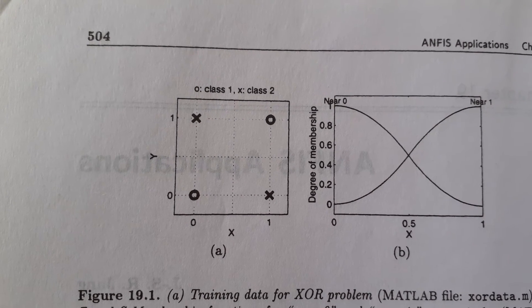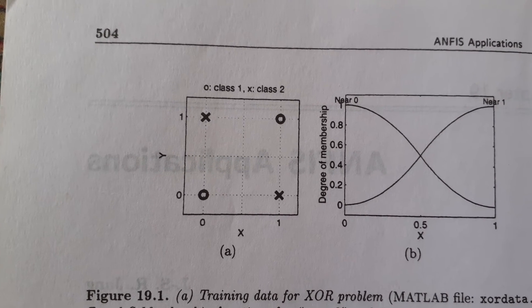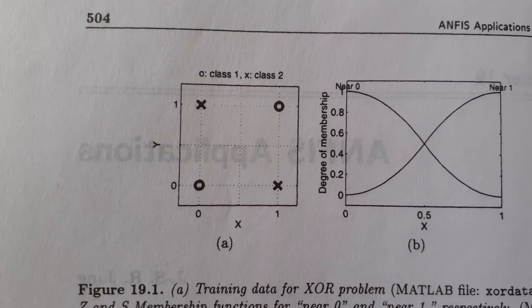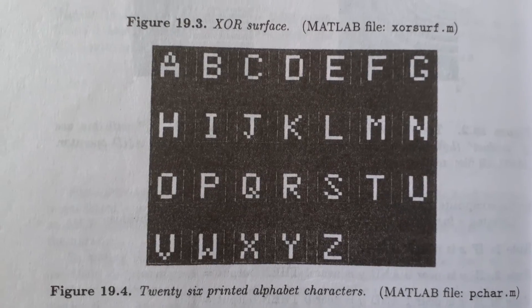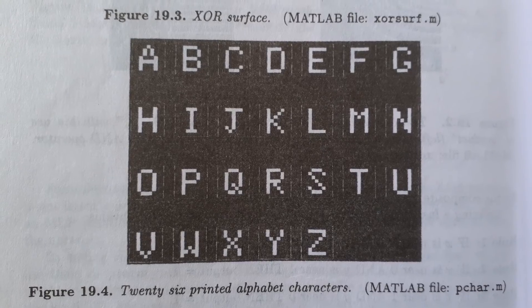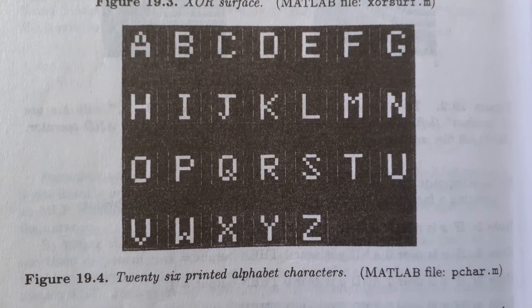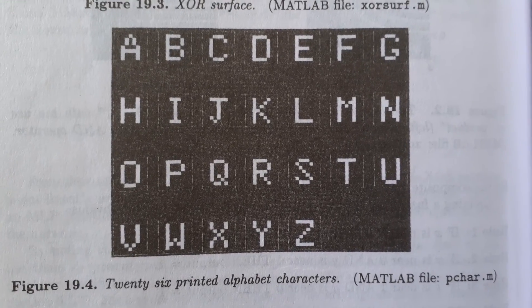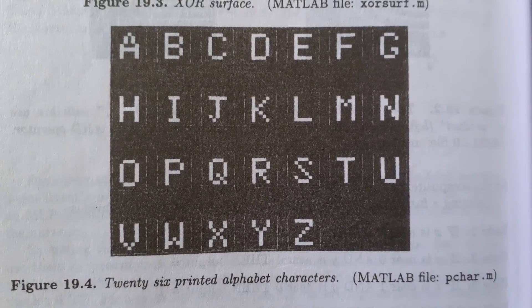Next is setup rules. Each prototype represents a rule, so we have 26 rules, each of them an AND rule with 35 preconditions. Each rule's output is not critical and we can set it to be an arbitrary constant or membership function.